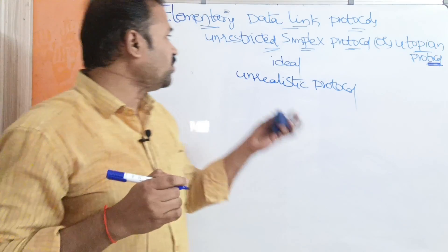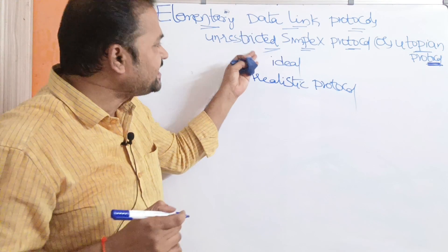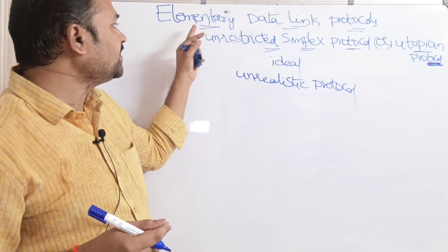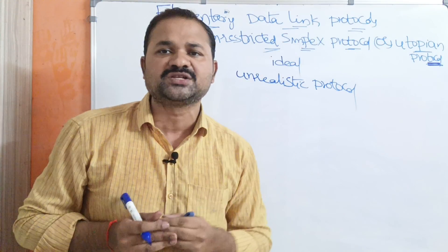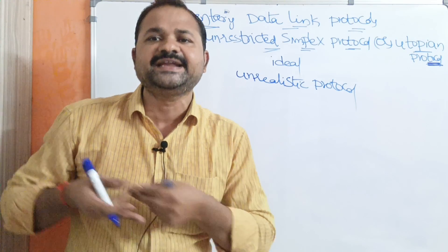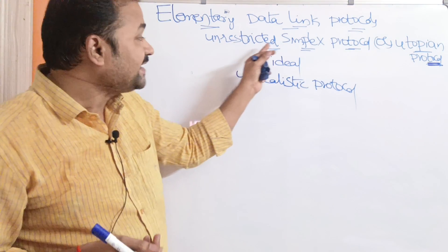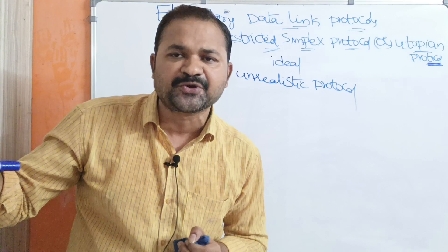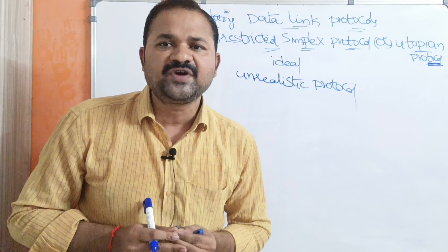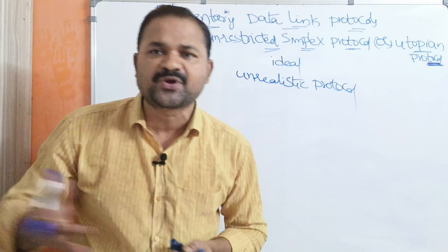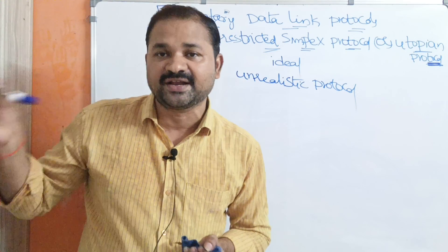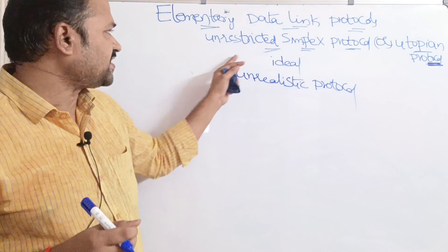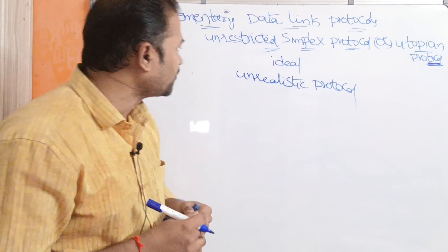Let us discuss unrestricted simplex protocol, which comes under elementary data link protocols. We have three elementary data link protocols: the first is unrestricted simplex protocol, the second is simplex stop-and-wait protocol for noisy channel, and the third is simplex stop-and-wait protocol for noiseless channel — that is, for an error-free channel. In this video, we are going to discuss the first elementary data link protocol.